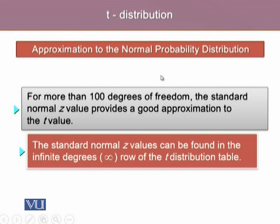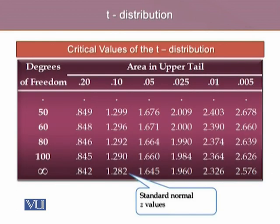For more than 100 degrees of freedom, the standard normal Z-value provides a good approximation to the T-value. And that's what we have learned in our Microsoft Excel demo. The standard normal Z-values can be found in the infinite degrees row. Most of the time in the table, it's the infinity row.